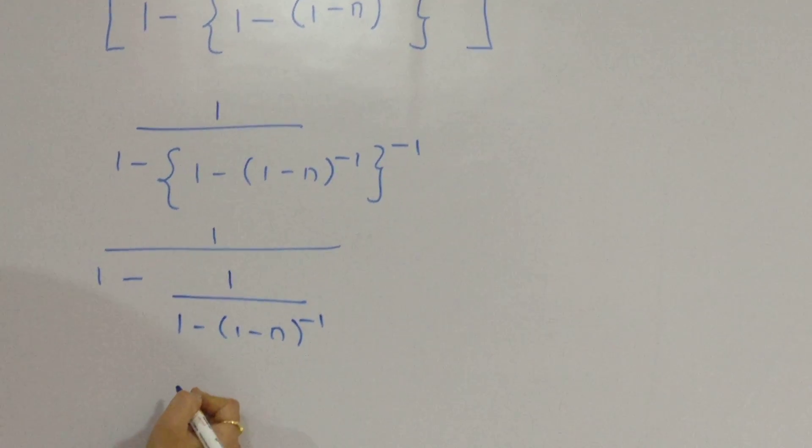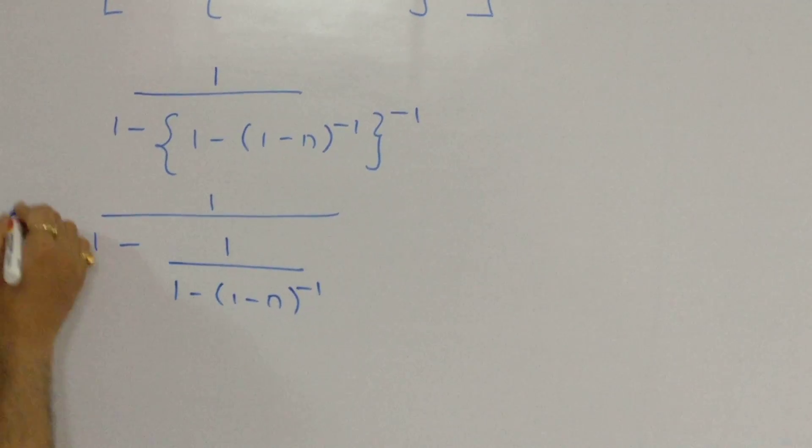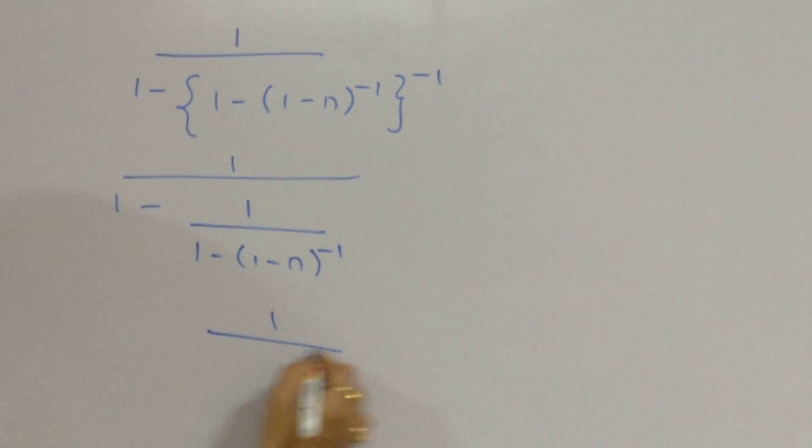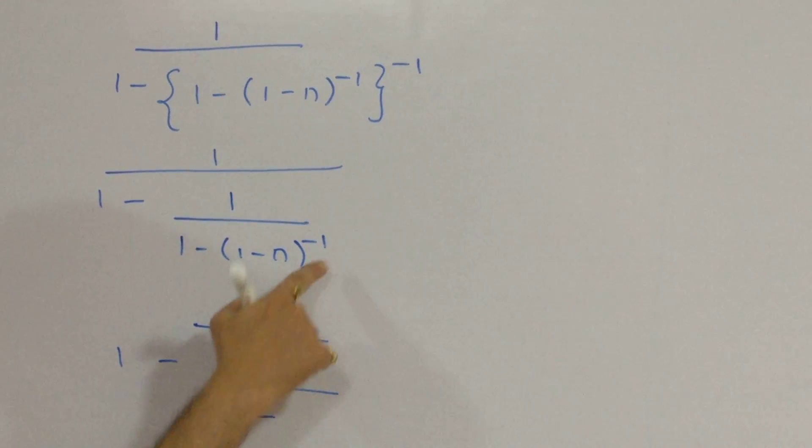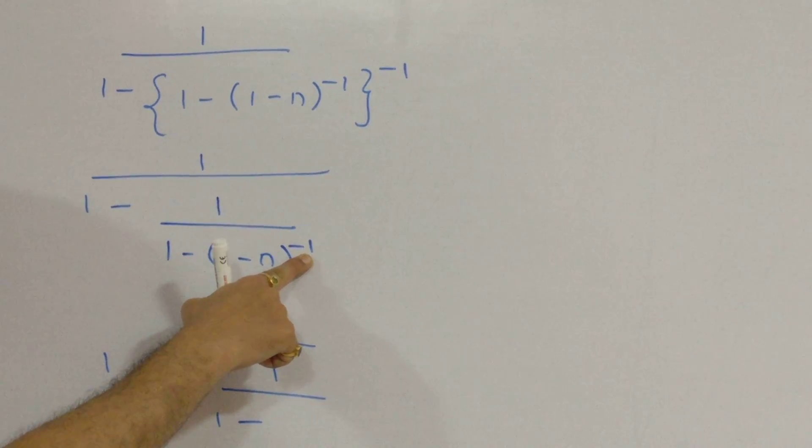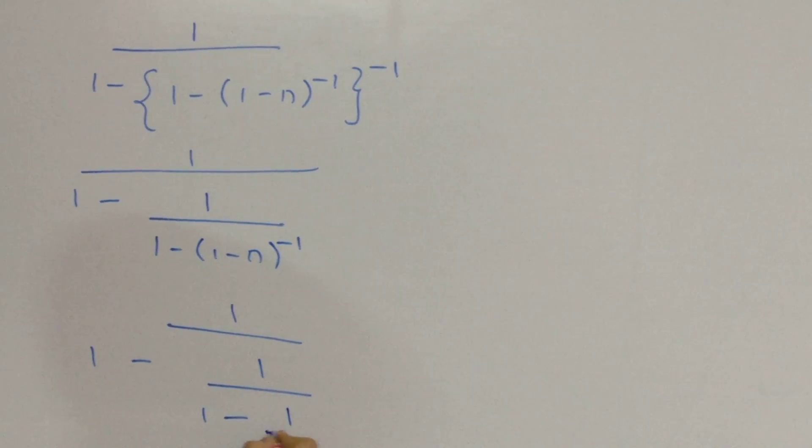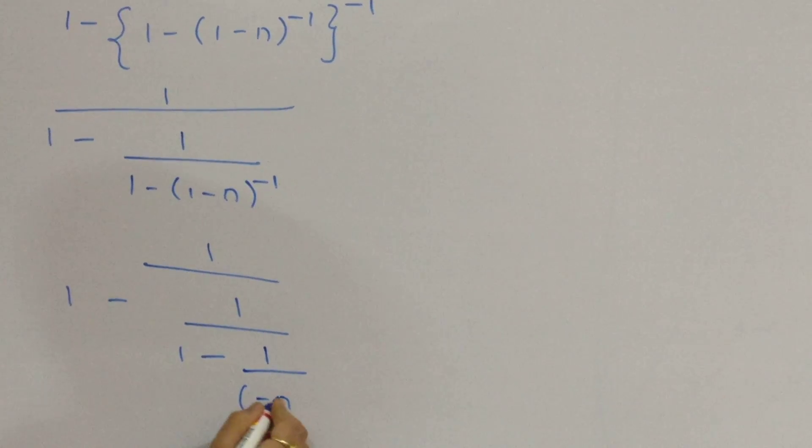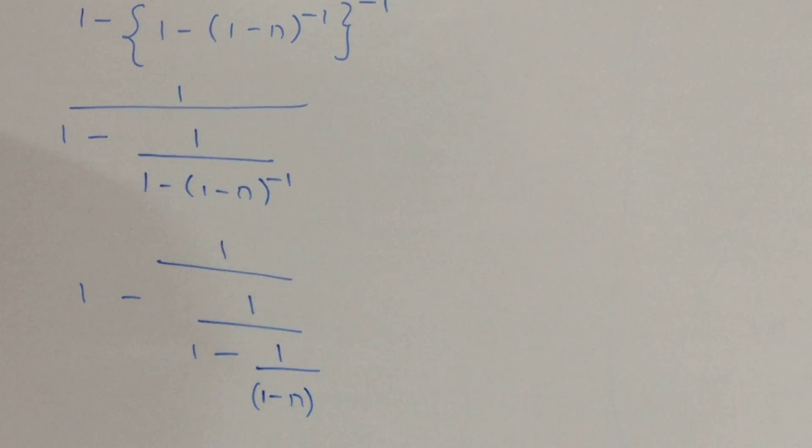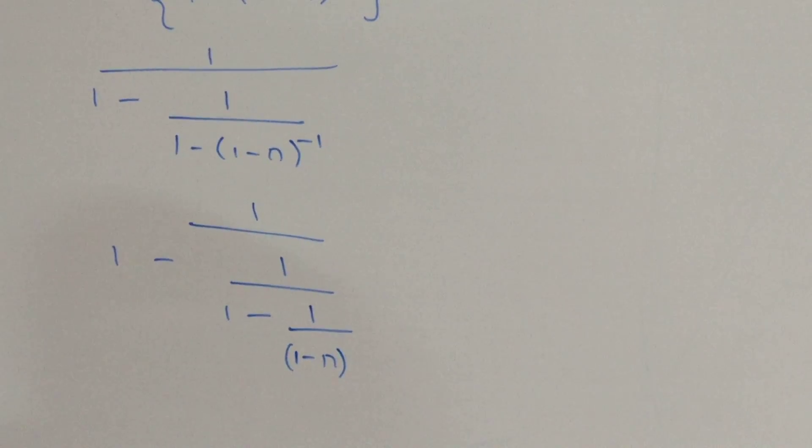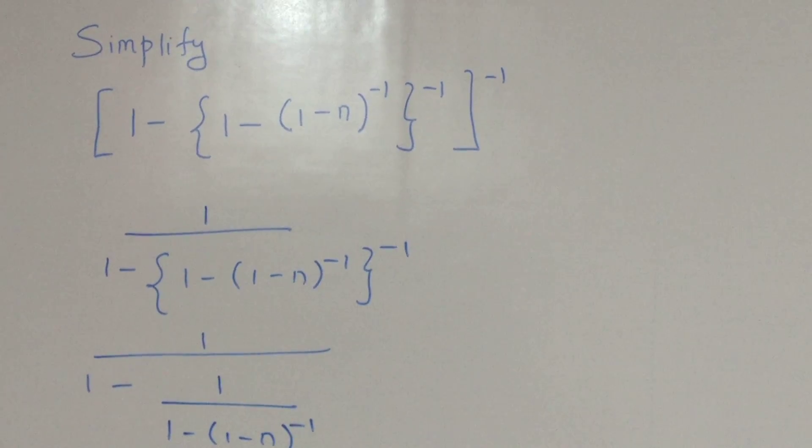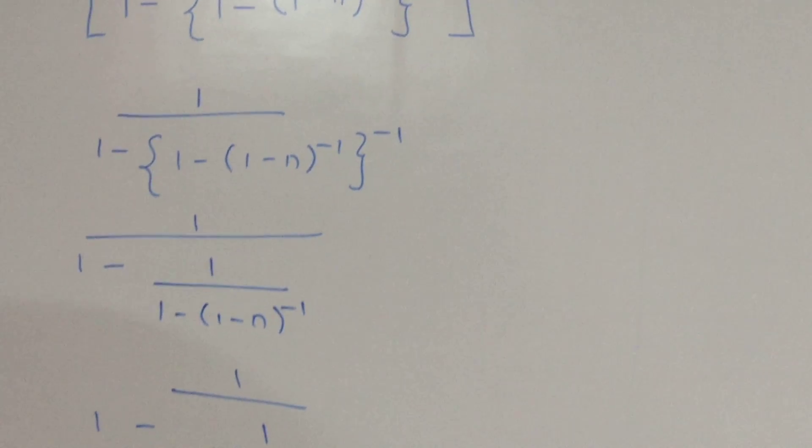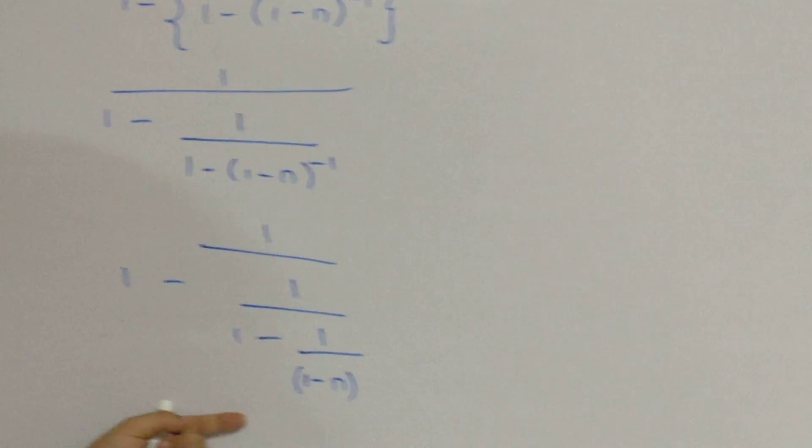What next? On the same lines is what we need to proceed further. We get 1 upon 1 minus. 1 upon 1 minus. Now we are going to get rid of this one, applying the same law. 1 upon 1 minus n. 1 minus n. So, eventually, we have taken all the negative powers and we are up to this particular level. Now, basic math is what we are going to apply. LCM.